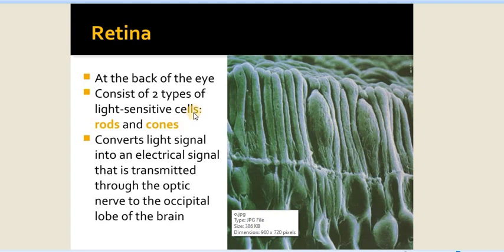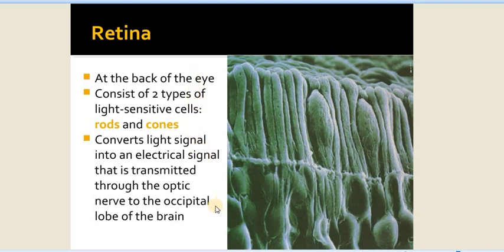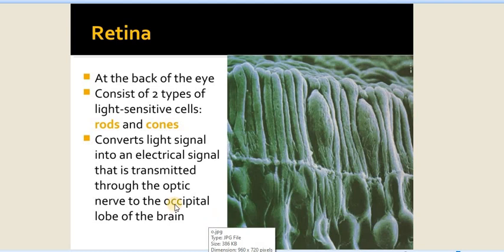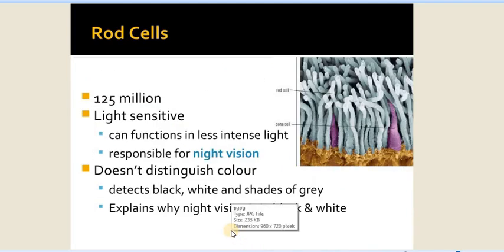Now we are moving towards the retina. The image of the object falls on the retina, which stimulates the end organs of vision — sensory receptors known as rods and cones — and these convert the light signal into electrical signals transmitted through the optic nerve towards the occipital lobe of the brain, the visual cortex. There are seven to nine layers of retina: the pigment layer, layer of rods and cones, external limiting membrane, external nuclear layer, plexiform layer, inner nuclear layer, inner plexiform layer, layer of ganglionic cells, and layer of optic nerve fibers.